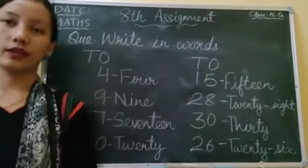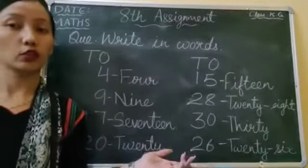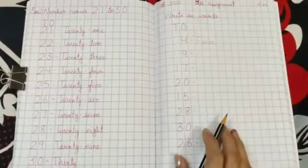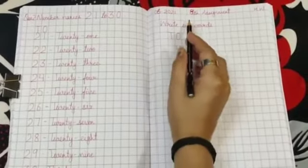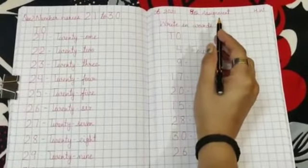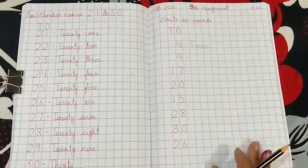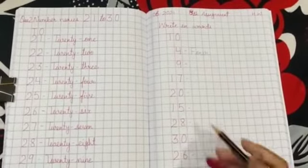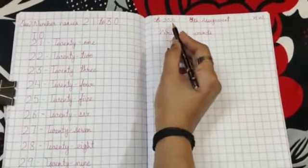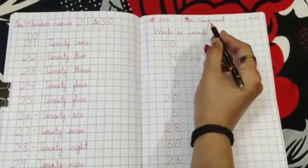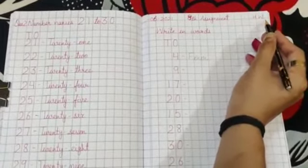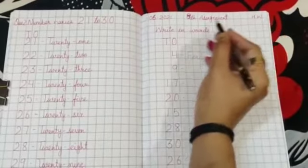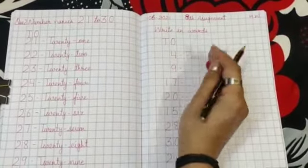Your handwriting should be very neat and clean. So students, this is your 8th assignment. Here, you have to write these numbers in words. First, you will write down the date. After that, write 8th assignment. Then write H.W. — Homework. Then come to the next line and write 'in words'.